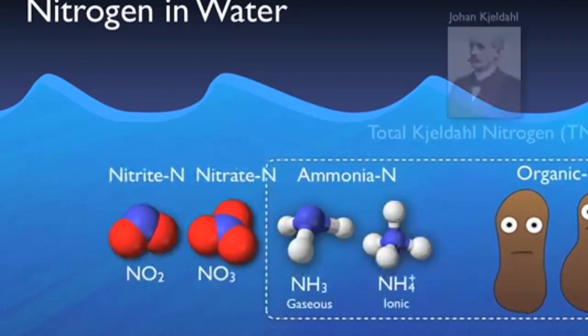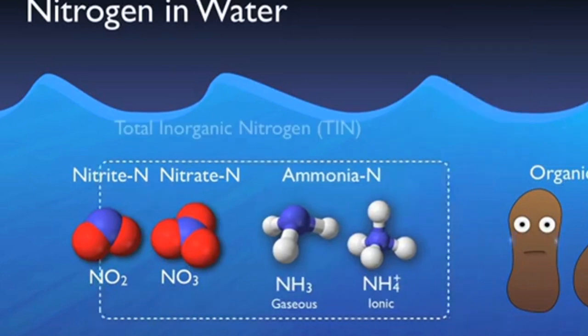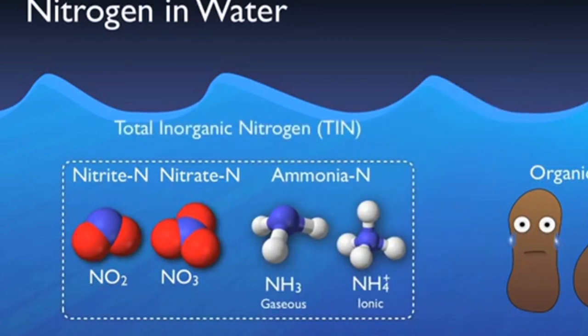TKN, or total Kjeldahl nitrogen, named after the scientist Johan Kjeldahl, is the sum of only organic nitrogen and ammonia nitrogen. TIN, or total inorganic nitrogen, is just as the name implies — the total nitrogen minus the organic nitrogen.